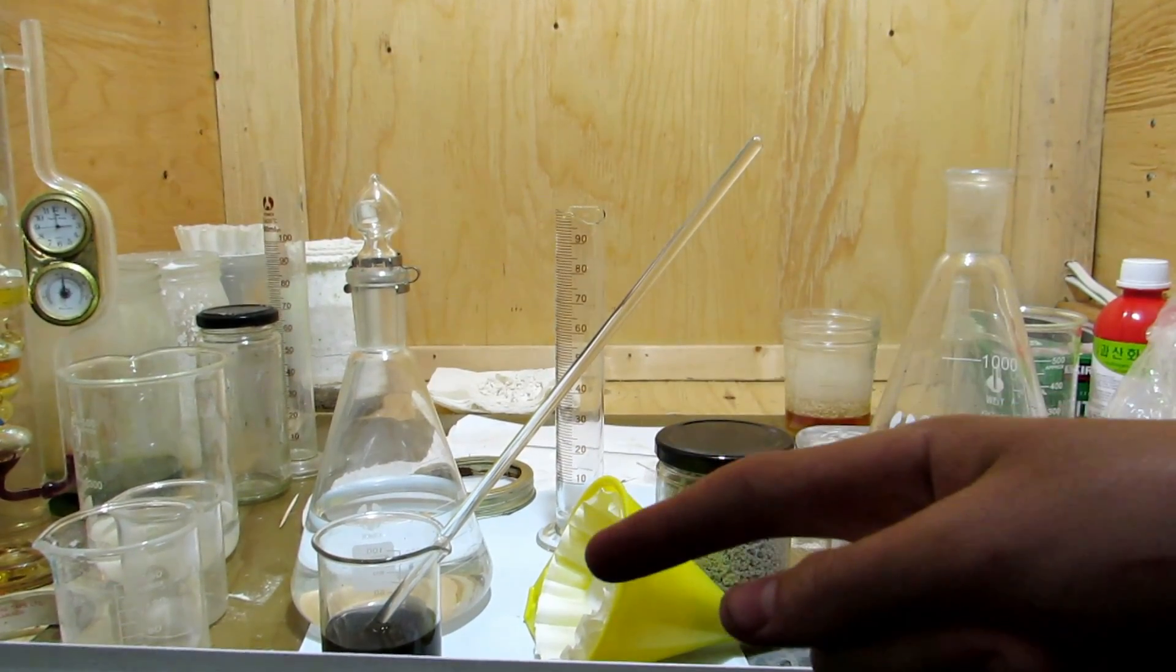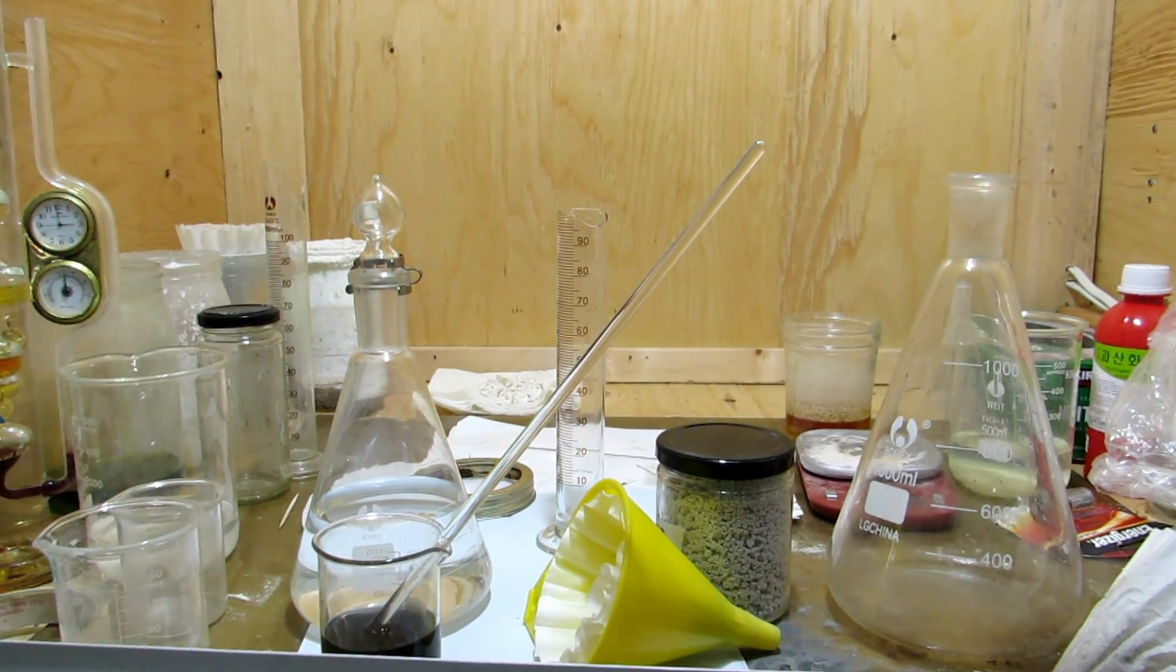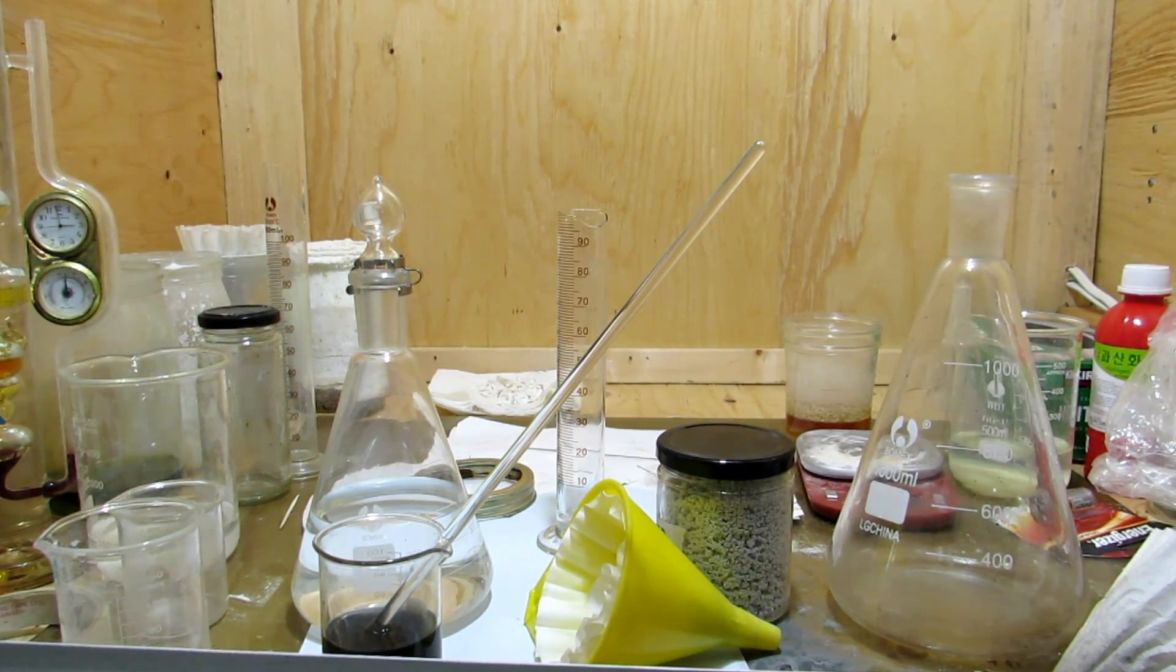Anyhow, so I'm going to now take this solution, filter it off, and hopefully we'll be left with a nice clear solution, which we can then boil down to obtain our pure potassium hydroxide.